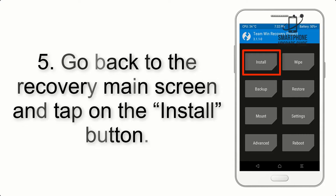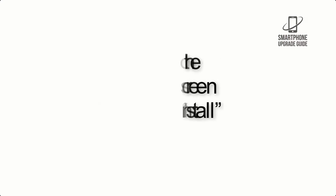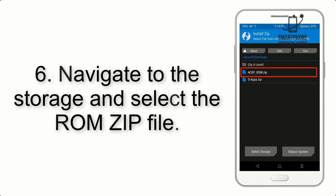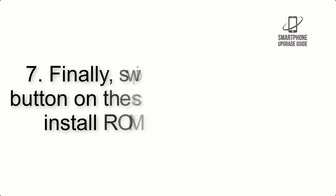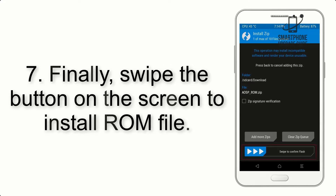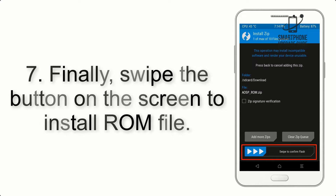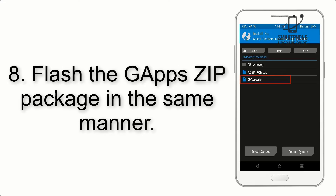Step 5: Go back to the recovery main screen and tap on the Install button. Step 6: Navigate to the storage and select the ROM zip file. Step 7: Finally, swipe the button on the screen to install the ROM file.